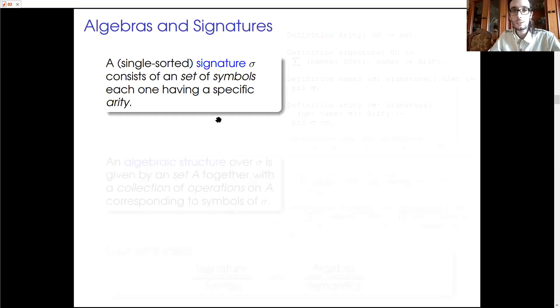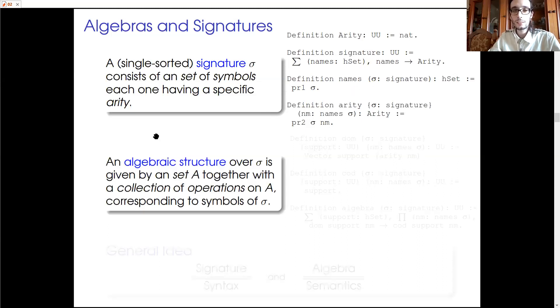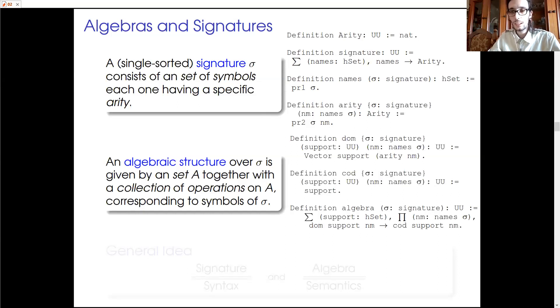So we could define a signature to be an inhabitant of a sigma type made of a set of symbols and an arity function. And similarly, we could define an algebraic structure over a signature σ, or a σ-algebra for short, is just an inhabitant of a sigma type made of a carrier set together with an assignment of operations of this type to symbols of σ.